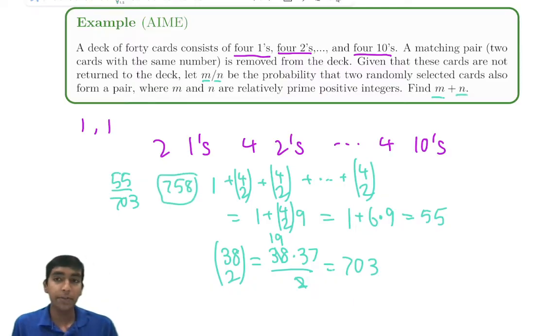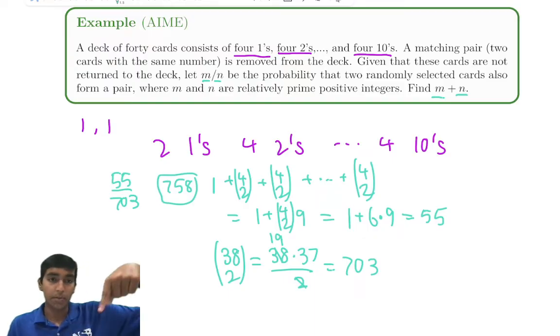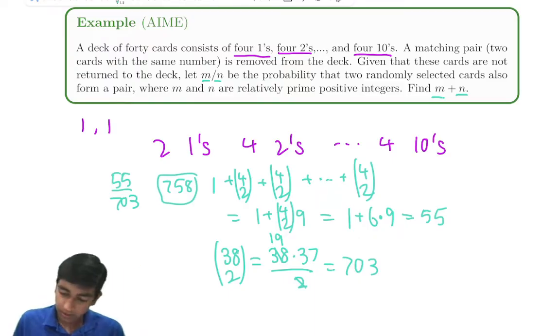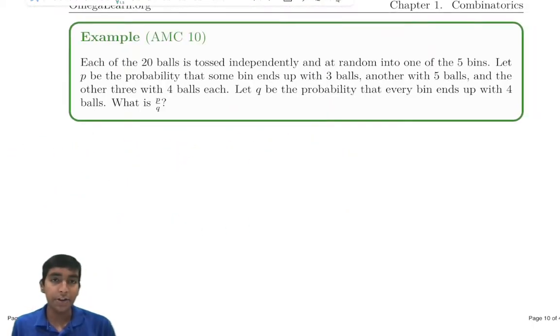So the answer is 55 over 703, which we have to find m plus n, which is 758. Also, by the way, if you're interested in more of these basic concepts and formulas, be sure to check out the videos linked in the description.